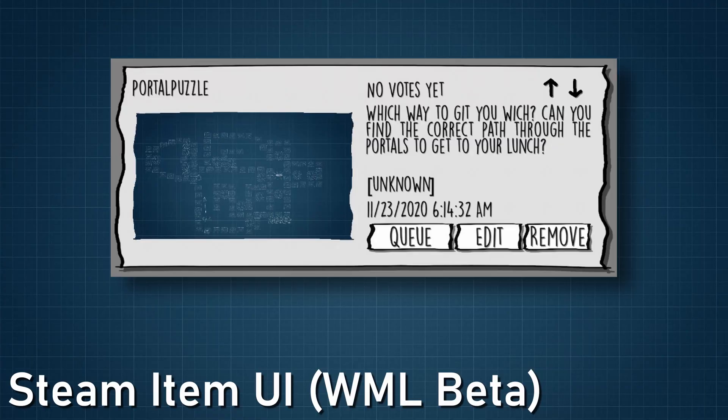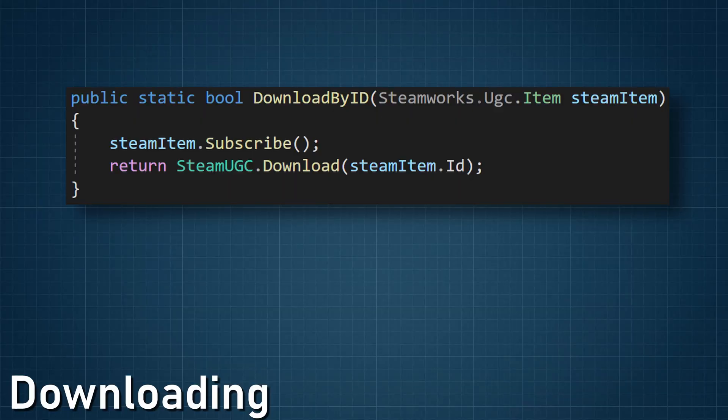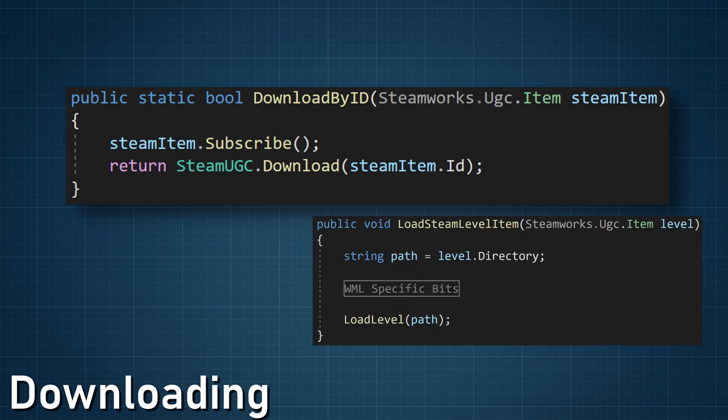The Steamworks item type gives you access to the title, description, votes by the community, a URL to the preview image, and a whole lot more. Accessing these properties is straightforward, but the handling of those values is very much dependent on your project. Here you can see my user interface for each workshop level — the buttons on the bottom right are contextual and change visibility depending on the status of the item. The actual downloading of items is quite simple: items are downloaded by Steam ID, which is readily accessible from the Steamworks item found in the search results. These files are then downloaded into a Steam folder, and the exact location can be found with the directory property of the Steamworks item.